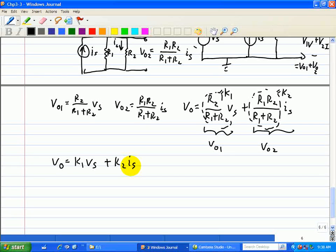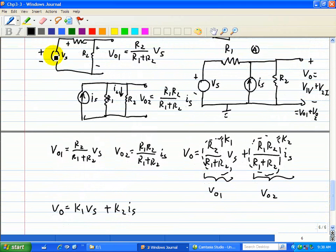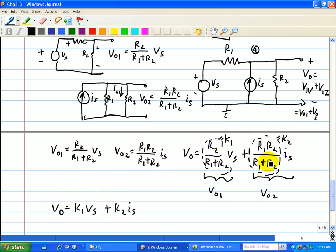So what this result shows is that the output is a linear combination of the two inputs. Our inputs is a voltage source VS right here and a current source IS, multiplied as a linear combination of K1 VS plus K2 IS, where K1 is defined as a ratio of these two resistors and K2 is a ratio of the product of these resistors over the sum of the two resistors. The units of K1 is dimensionless and the units of K2 is in ohms. So this illustrates the concept of additivity associated with this circuit.